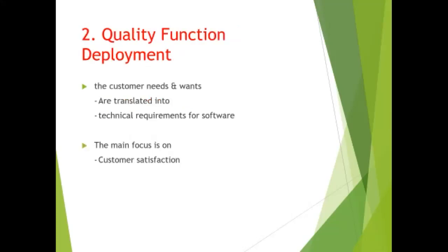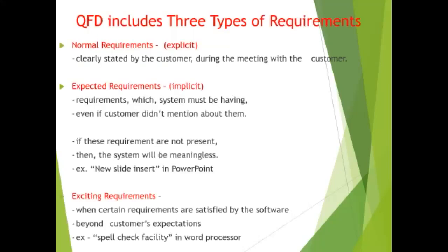The second step is quality function deployment, which means that the customer's needs and wants are translated into technical requirements for software. The main focus is on customer satisfaction. Quality function deployment includes three types of requirements. First, normal requirements — simply called explicit requirements — which are clearly stated by the customer during meetings.